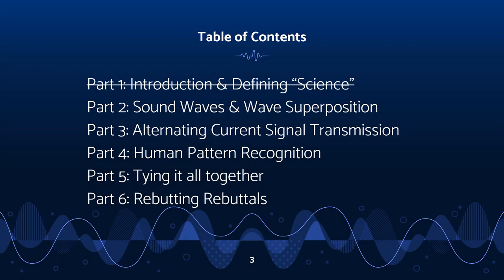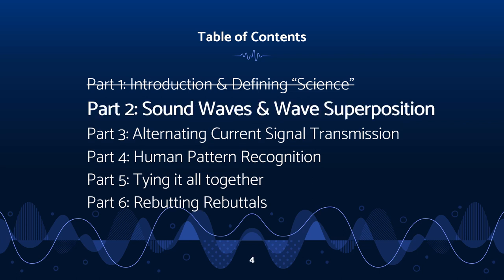In part one we defined science, talked about what it is, some of the ways in which it is done, and why it's so important. Here in this video we are going to look at sound waves and wave superposition, and then in the near future we'll come back and talk about alternating current signal transmission and pattern recognition, and then tie all of that stuff together. But for right now, let's talk about waves and wave superposition.